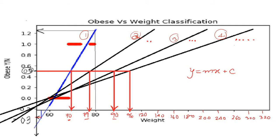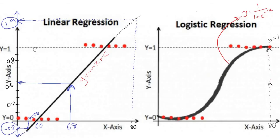To handle this, we use something called the sigmoid curve. The equation for the sigmoid curve is y = 1 / (1 + e^(-x)), where e is Euler's number, which is approximately 2.71828. This sigmoid curve works at the backend of logistic regression.